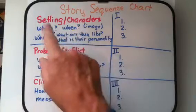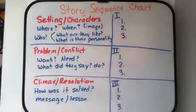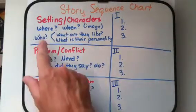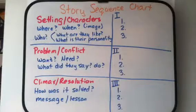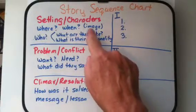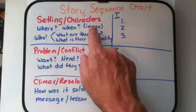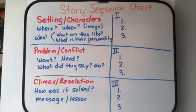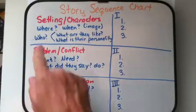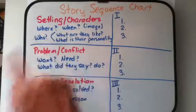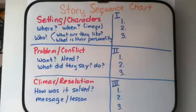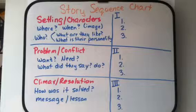The first paragraph is the setting and characters. The setting is where and when the story takes place, and you're going to describe those in such a way that gives your reader an image of what you're writing about. The characters are who is in the story — what are they like and what is their personality?